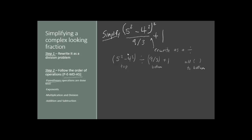Let's do our exponents first. We have 5 squared minus 4 squared in the first parentheses. Well, 5 squared is just 25, and 4 squared is just 16, and the rest of it stays the same for the moment. We are not going to operate that 2 right here yet — we're going to hold off on that until we do everything inside the parentheses first. That takes care of our exponents.